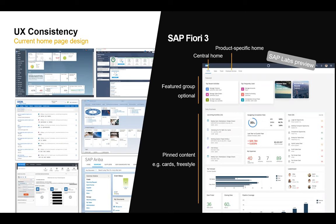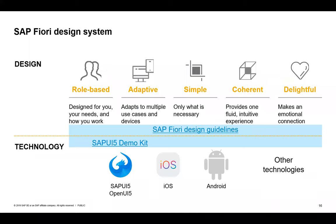SAP Fiori 3 is targeting a consistent user experience across all SAP solutions by introducing respective elements: a common shell header bar — this dark bar at the top — to navigate between different solutions and applications. You also see additional screen elements, and you're much more flexible designing different pages of the Fiori Launchpad, including cards. The five Fiori design principles remain unchanged since we started with UI5.